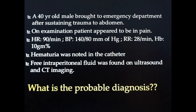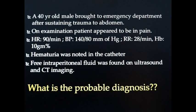A 40-year-old man was brought to the emergency department after sustaining trauma to the abdomen. On examination, the patient appeared to be in pain. Heart rate was 90 per minute, BP was around 140/80, respiratory rate was 28 per minute, hemoglobin was 10 grams percent, hematuria was noted in the catheter and urine bag, and free intraperitoneal fluid was found on ultrasound and CT imaging. So what is the probable diagnosis?